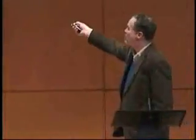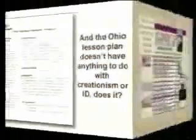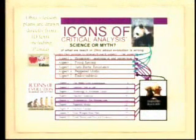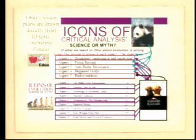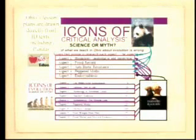The lesson plans don't have anything to do with creationism or intelligent design, do they? Well, if you look very closely at those lesson plans, you will discover that of the five lesson plans, four of them come directly out of the Pandas and People book — the creationist book that was relabeled as an intelligent design textbook. The fifth one comes directly from Michael Behe's book Darwin's Black Box. These are also found in other intelligent design textbooks, including Icons of Evolution by Jonathan Wells. Go to the Discovery Institute website and you will find these are touted as the source books of intelligent design.